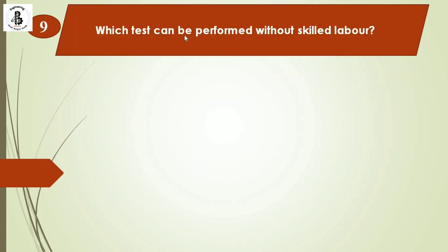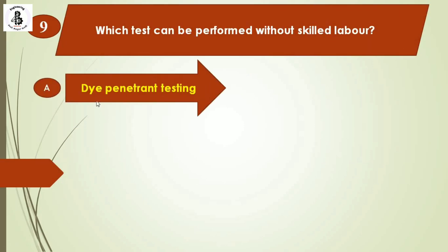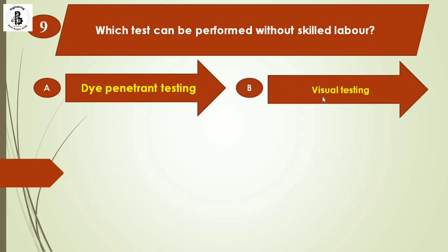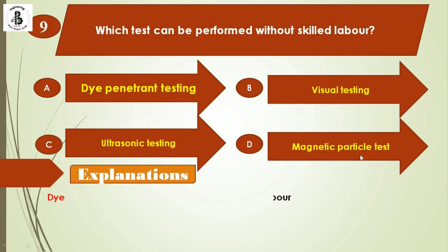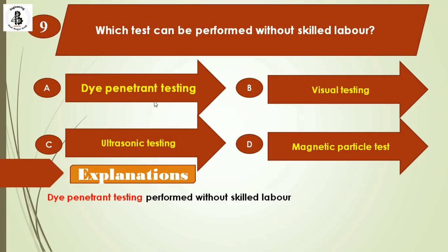Next question: Which test can be performed without skilled labor? Option A: dye penetration testing. Option B: visual testing. Option C: ultrasonic testing. Option D: magnetic particle test. Dye penetration testing (DPT) can be performed without a skilled operator because the steps are simple and anyone can use it to test materials. Visual testing, ultrasonic testing, and magnetic particle testing all require skill. DPT is the simplest technique.